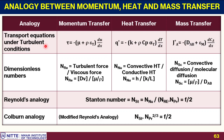Under turbulent conditions — convective flow — the flux equals the sum of diffusive and eddy current contributions. The eddy diffusivity terms are present in all three transport cases. In purely molecular diffusion, the eddy diffusivity term goes to zero. Under turbulent conditions, both molecular diffusion and convective currents take place simultaneously, but the dominant mechanism is the convective current.